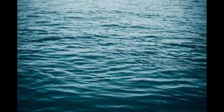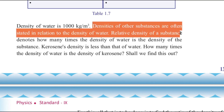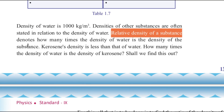The density of water is 1000 kilogram per meter cube. Please note that density has the unit kilogram per meter cube. The densities of other substances are often stated in relation to the density of water, and we compare them with water's density of 1000 kg/m³. The term we use for this comparison is relative density.